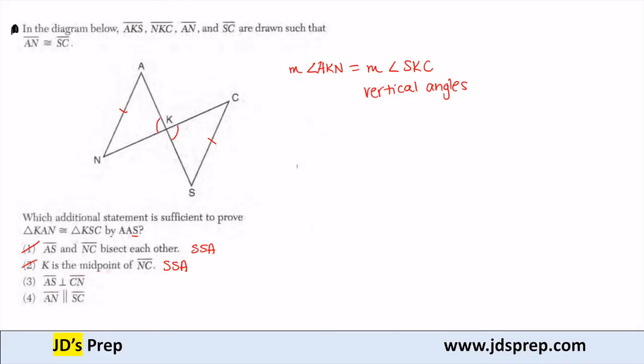So the one that could help us is number 4. If I know that AN is parallel to SC, then I can use alternate interior angles to get another angle congruence.